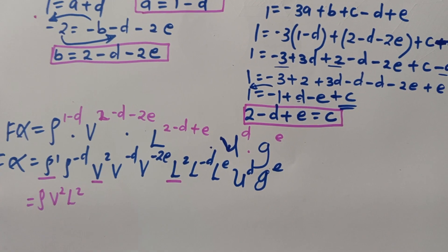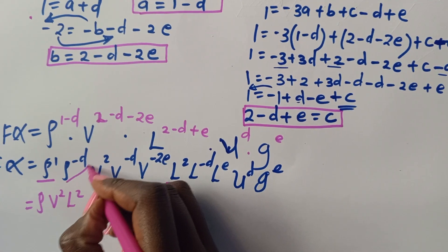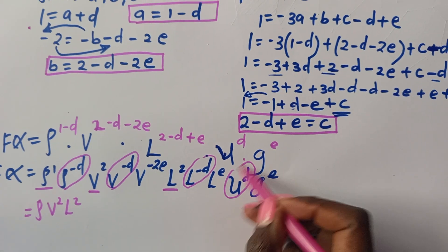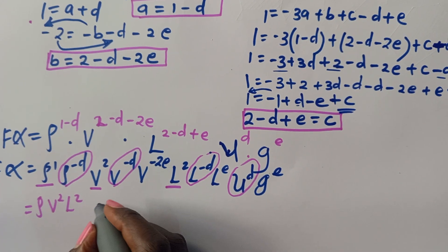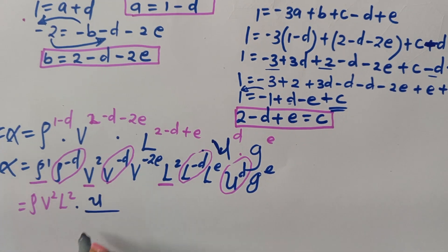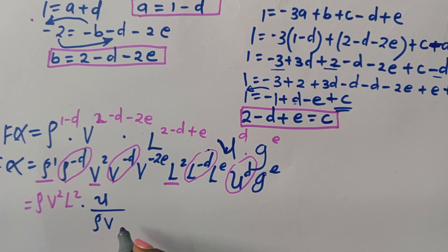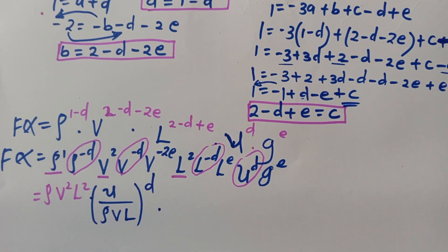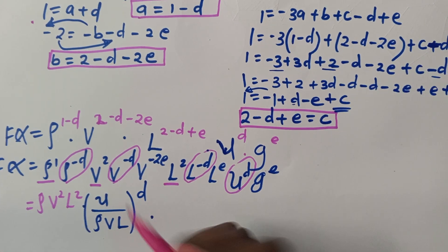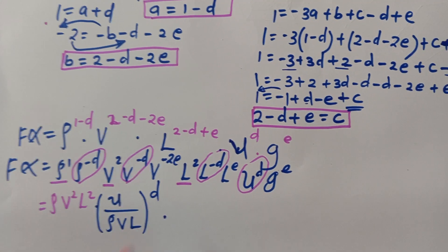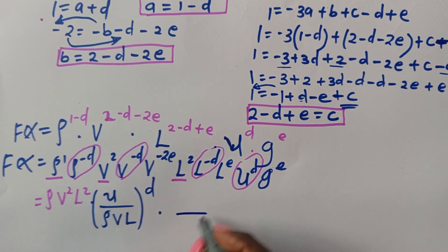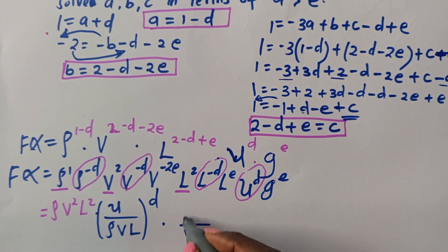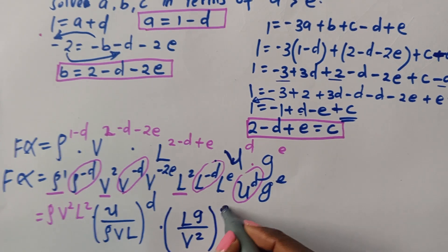Next, collect all terms with power D: we have rho⁻ᴰ, V⁻ᴰ, L⁻ᴰ, and mu raised to D. This groups as mu over (rho · V · L), all raised to D. Then collecting all terms raised to E: V⁻²ᴱ, Lᴱ, and Gᴱ gives (LG over V²) raised to E.